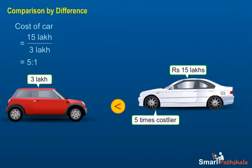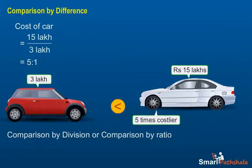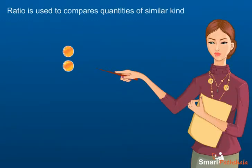This type of comparison where we divide the two quantities is called the comparison by division. Comparison by division is also called ratio. A ratio is a comparison of two similar quantities obtained by dividing one quantity by the other.